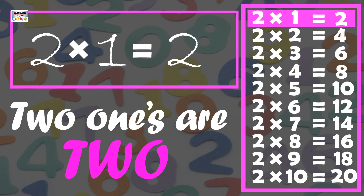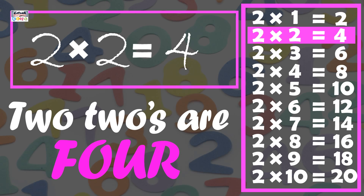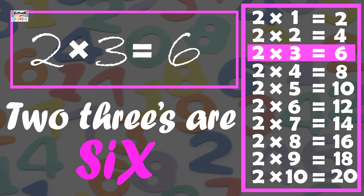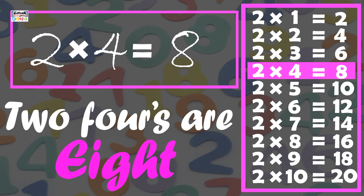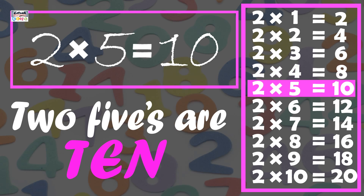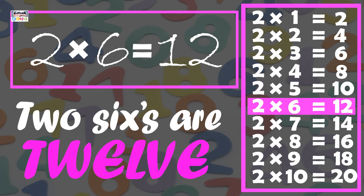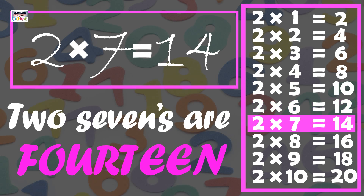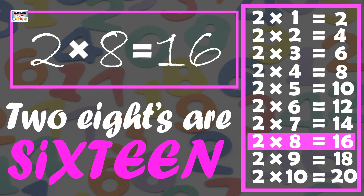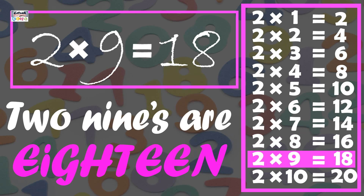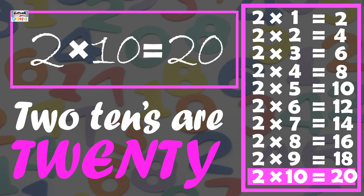2 times 1 is 2, 2 times 2 is 4, 2 times 3 is 6, 2 times 4 is 8, 2 times 5 is 10, 2 times 6 is 12, 2 times 7 is 14, 2 times 8 is 16, 2 times 9 is 18, 2 times 10 is 20.